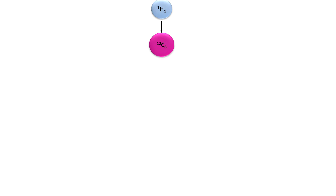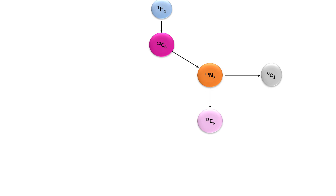In the CN cycle, carbon is used as a catalyst. Carbon upon combination with a proton produces a nitrogen isotope — specifically N-13 (atomic number 7, atomic mass 13). Next, this nitrogen isotope decays and emits a positron. At each and every step energy gets released due to the mass defect. By the decomposition of this nitrogen isotope, a positron is emitted and a carbon isotope is produced.